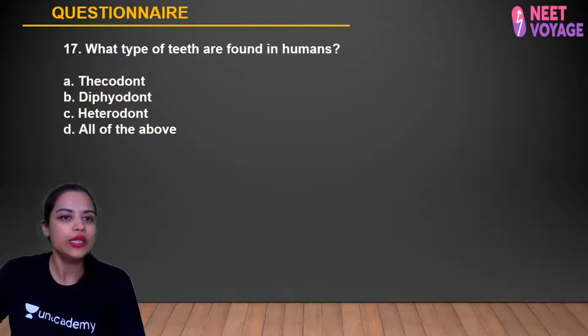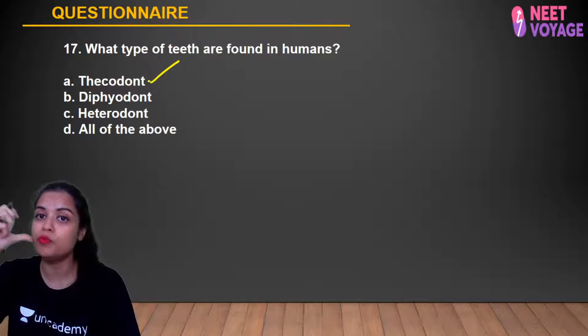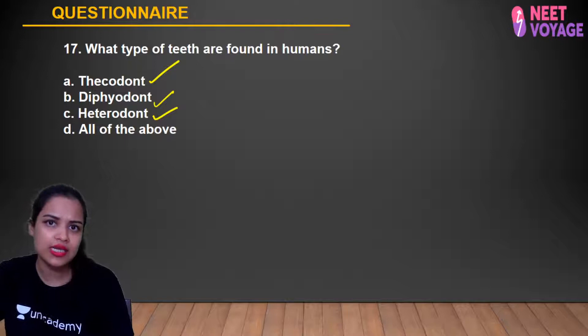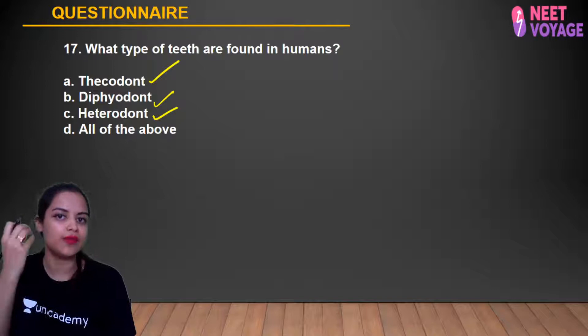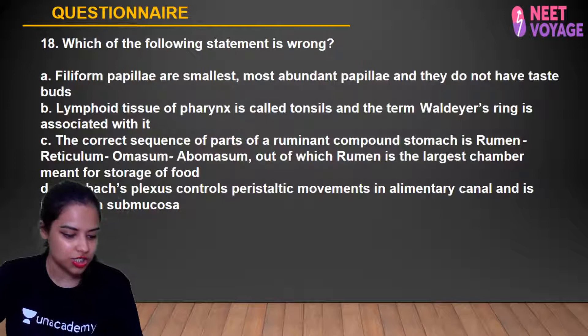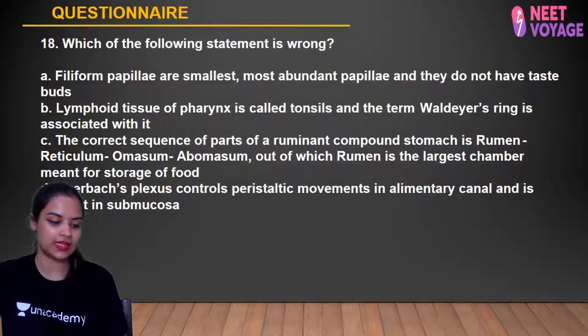Question 17: What type of teeth are found in humans? Thecodont — our teeth are embedded in bony sockets (alveolar bone) in the gum. Diphyodont — two sets of teeth: deciduous (milk) teeth, then permanent teeth. Heterodont — different types of teeth: incisors, canines, premolars, and molars. So all of the above is correct. Shashank, Samreen, Pranath, Sabah, Alok, Anshika, Simran, Tanusha, and Anusha all gave the correct answer.